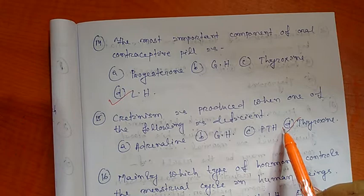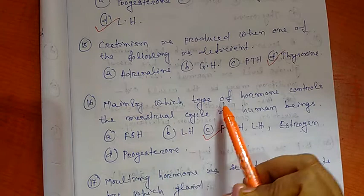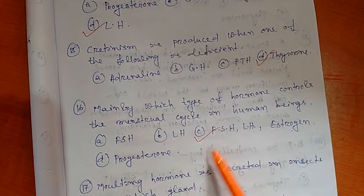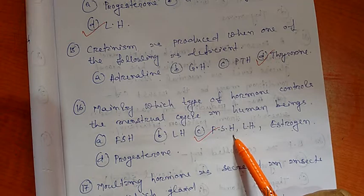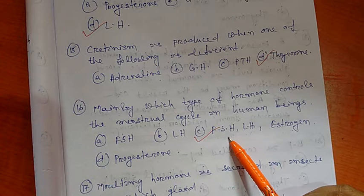Question number 16: Mainly which type of hormone controls the menstrual cycle in human beings? The right option is C: FSH, LH, and estrogen. That is follicle stimulating hormone, luteinizing hormone, and estrogen control the menstrual cycle in females.